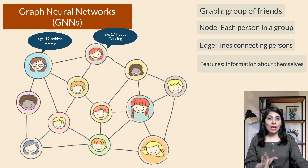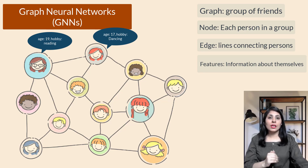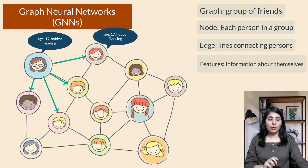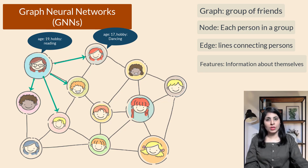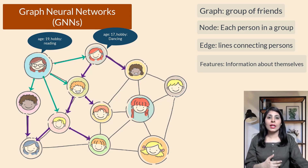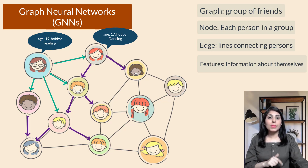A GNN starts by looking at each person and their immediate friends — that is, the nodes connected to them. It collects information from those friends and combines it with the person's own information. Then the GNN moves to the next layer and repeats the process, looking at friends of friends and collecting information from them as well, helping it understand the connections between people.